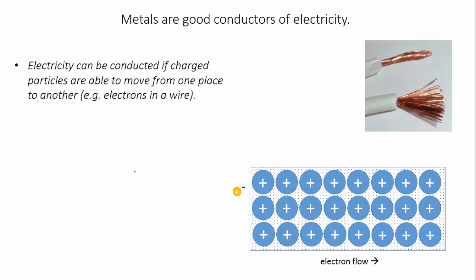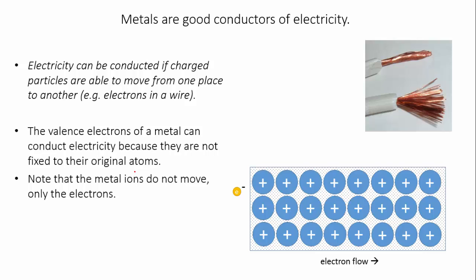For electricity to be conducted through a material, charged particles must move from one place to another. In a metal, the delocalized valence electrons in the metal lattice are able to move through the lattice, and this allows metals to conduct electricity.